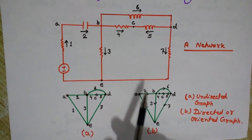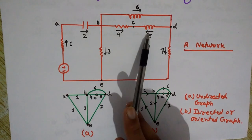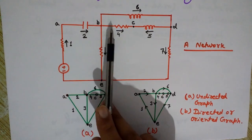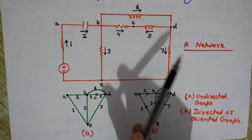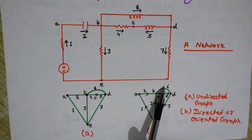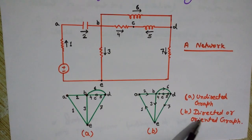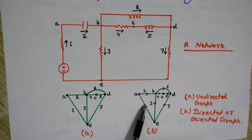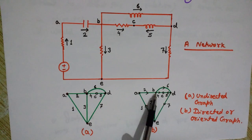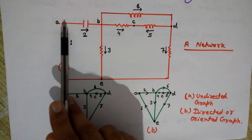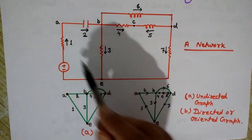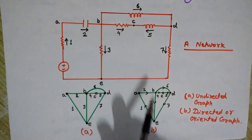And if we represent the components with orientations — these are the orientations for the currents — and if we mention them in the graph, then it is a directed or oriented graph. As you can see, branch number 1 is directed upward, and branch number 2 is in the rightward direction. So this is the oriented graph with the same orientations as shown in the network.